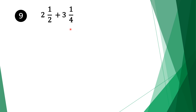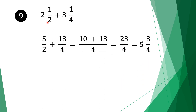Moving on to equation 9. We have 2 and a half plus 3 and 1 quarter. The first thing we do is convert our mixed fractions into normal fractions. Multiply the denominator: 2 times 2 is 4, plus 1 is 5. Bring the denominator 2 and the plus sign. Do the same for the second fraction: 4 times 3 is 12, plus 1 is 13. Bring the denominator 4. Now we have normal adding fractions. We don't have the same denominators, but 4 is divisible by both 4 and 2, so 4 is the common factor.